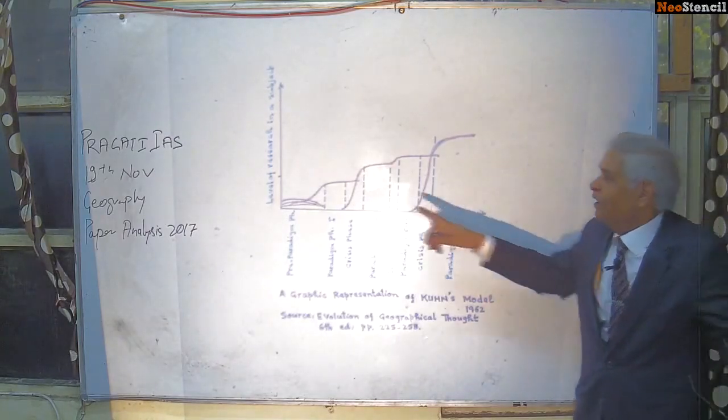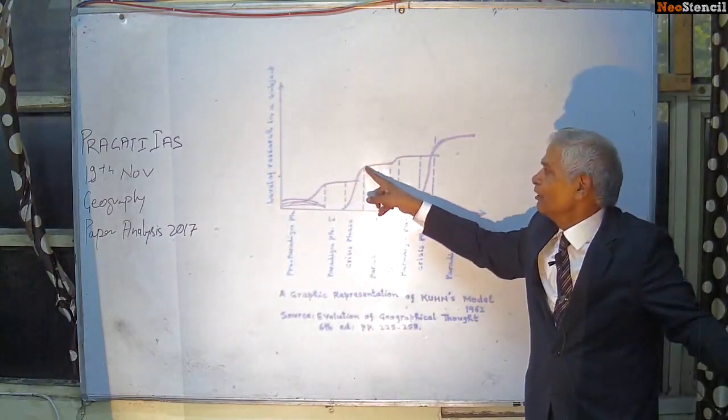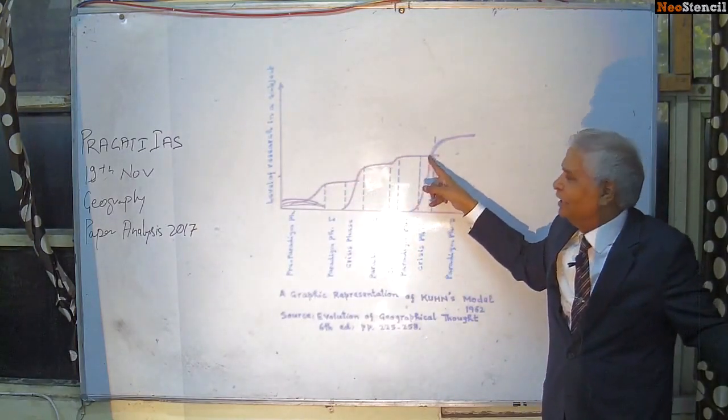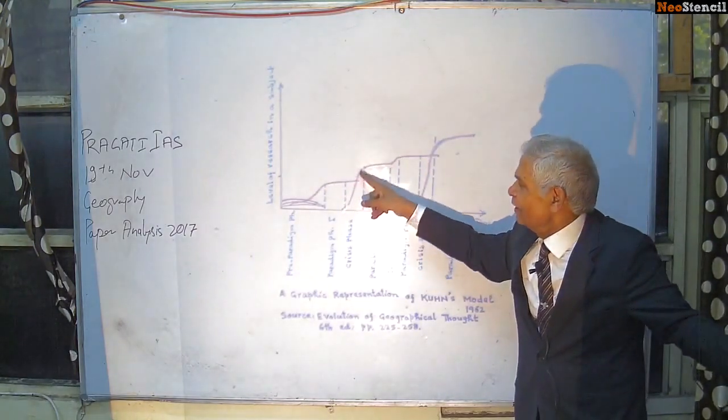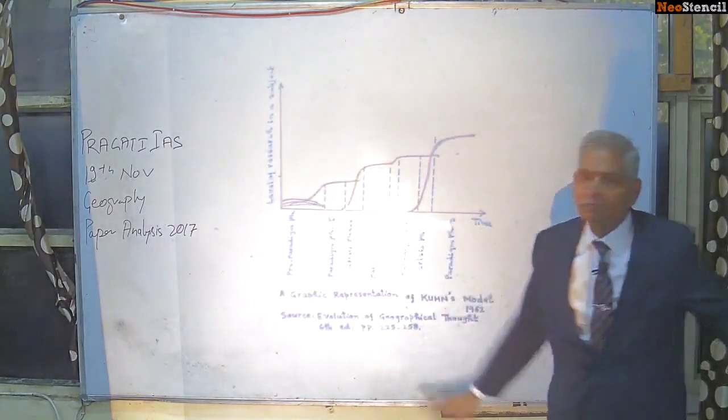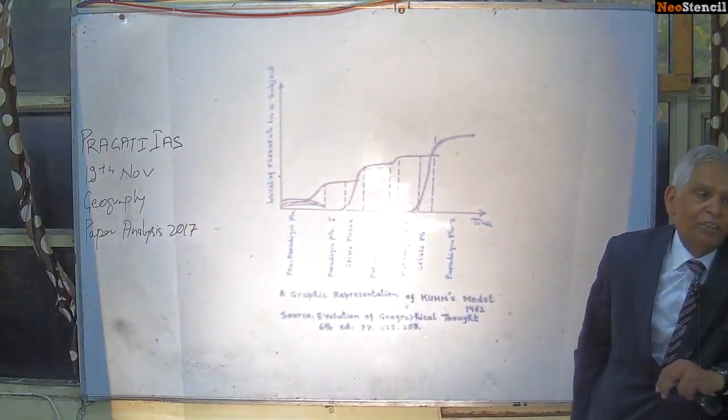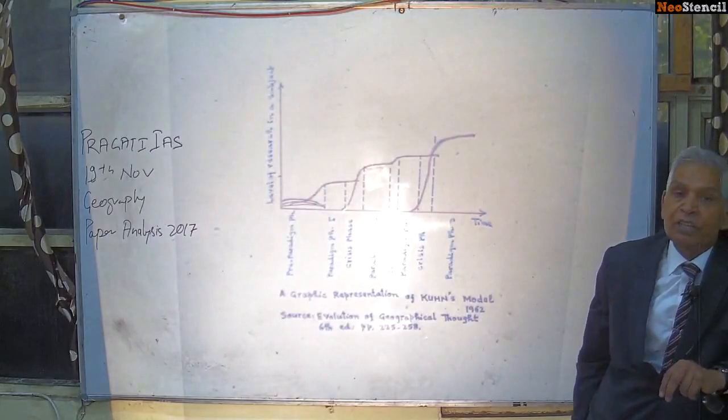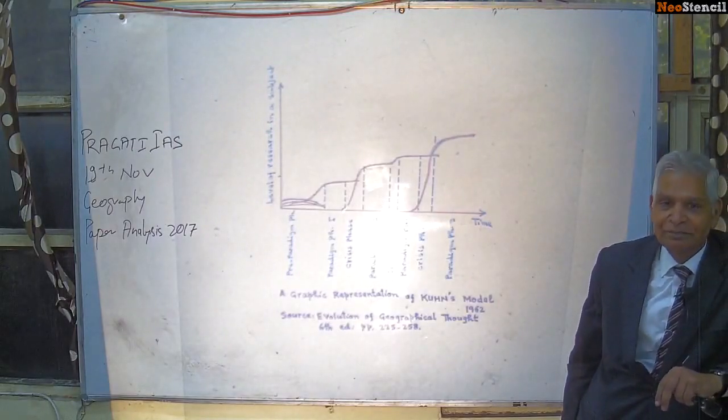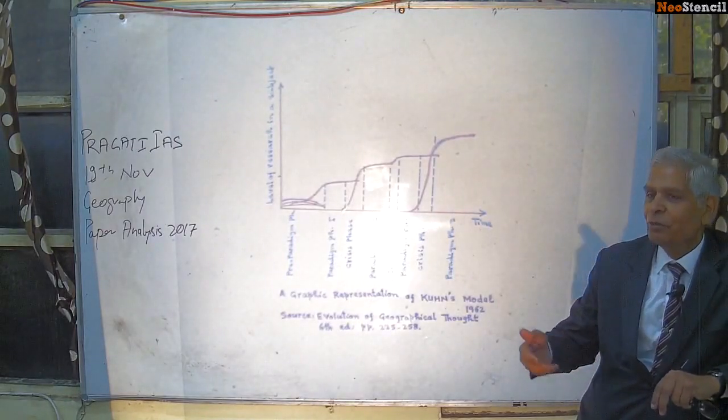In this diagram, there are some plateaus. These plateaus are the peaceful periods. And these verticals, they show the crisis period. When there is a crisis, the scientists develop new theories.